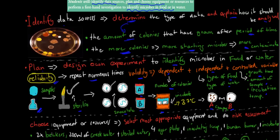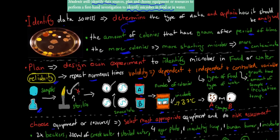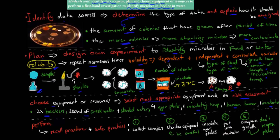For 'choose equipment or resources,' you need to select the most appropriate equipment and do a risk assessment. In this case: two beakers, two mL of creek water and two mL of sterilized water, four agar plates, an inoculating loop, a Bunsen burner, and an incubator. One risk was burning yourself at the Bunsen burner, and another risk was after growing the microbes — if the plate was opened, those pathogens might escape and cause problems.